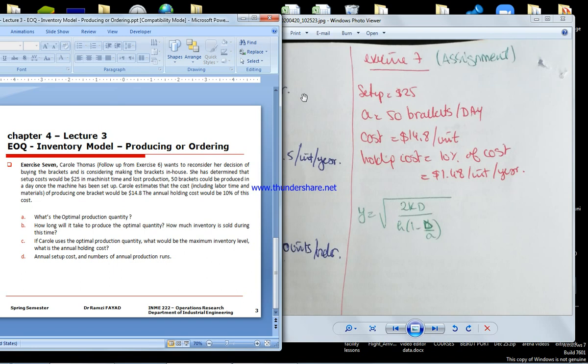She estimates the cost of $40.8, and the holding cost is ten percent, which is $1.48 per unit per year. Demand is still the same as before, but now you're producing the unit in-house.